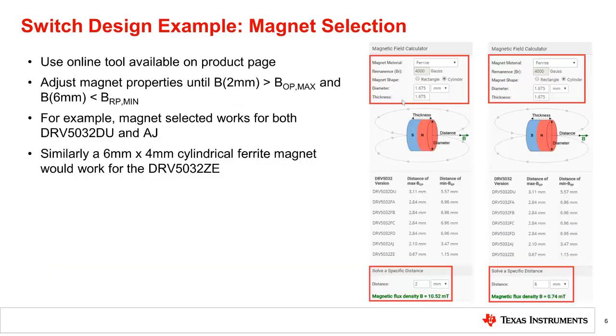With sensor selection completed, a suitable magnet must now be selected. Magnet selection requires a few iterations. The selection process is simplified greatly by our online magnetic field calculator. The calculator takes magnet geometry and material type as inputs and calculates the B-field amplitude in millitesla at various distances from the magnet's north-south axis.